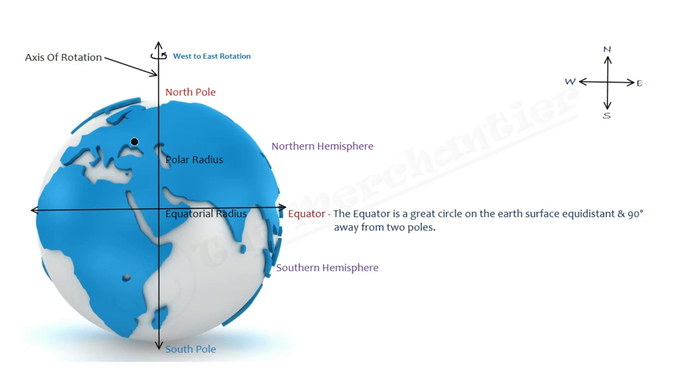So this is our Earth, and Earth rotates with the help of this axis called the axis of rotation. Earth has two poles: first, North Pole, and the other, South Pole. If we look at North Pole, the Earth's direction of rotation is west to east.